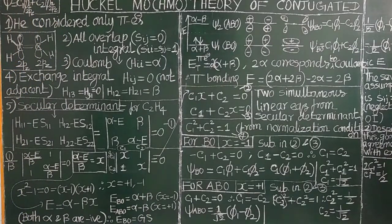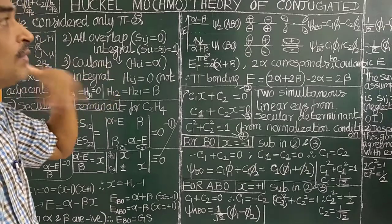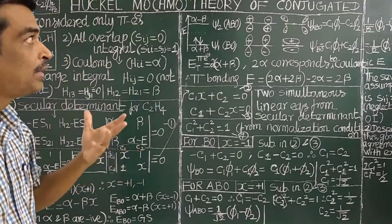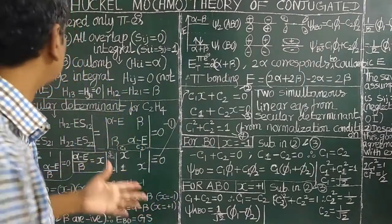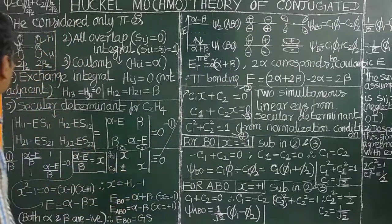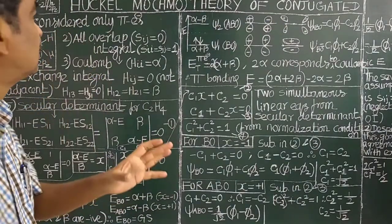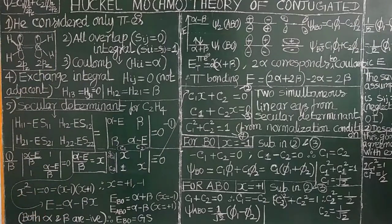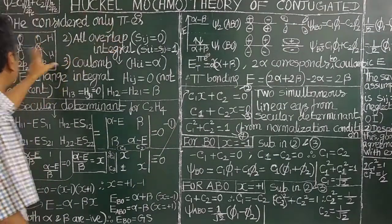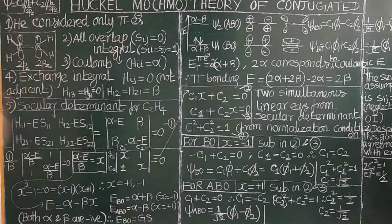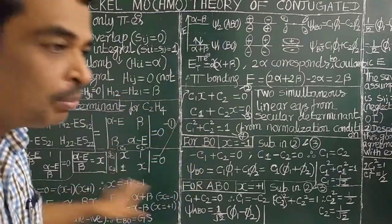In HMO theory, Hückel made several assumptions — four notable assumptions. First, he considered only the pi electrons, not the sigma electrons.